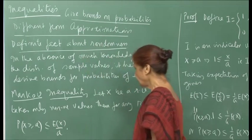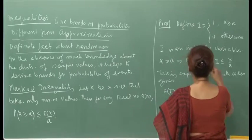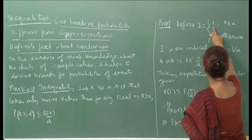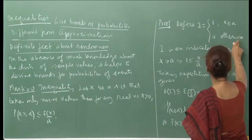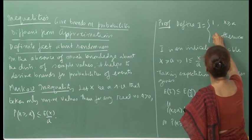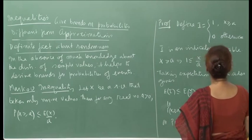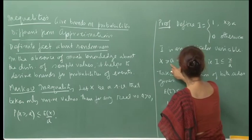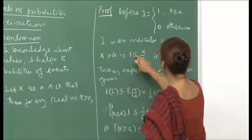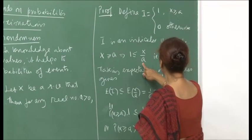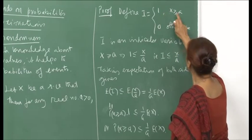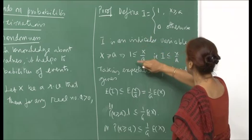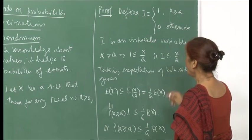This is not difficult to prove. We define an indicator variable i which takes value 1 when x is greater than or equal to a, and 0 otherwise. Now, when x is greater than or equal to a, this implies that 1 is less than or equal to x divided by a. Since i equals 1 whenever x is at least a, we can write that i is less than or equal to x divided by a.